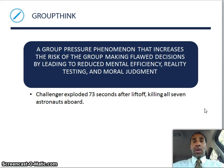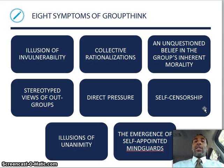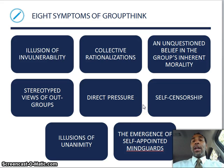There are eight symptoms of groupthink — go back and check those out. Direct pressure is one of them. Groupthink can occur in a jury room, for example: 'We know he's guilty, we're all going to pressure this one person — come on, you need to get on board and go with what the rest of us are saying.'